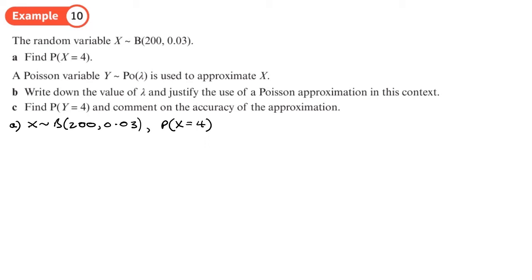Menu 7, we're doing binomial PD. X is 4, n is 200, p is 0.03, and we get an answer of 0.1338, so this is 4 decimal places rounded correctly.